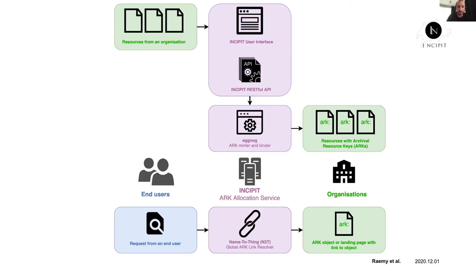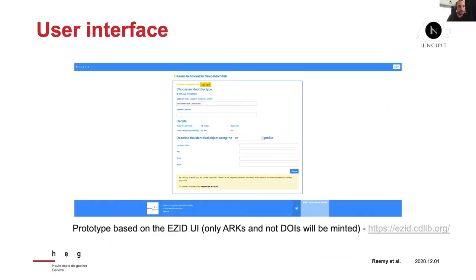You can see in the diagram how we explain the workflow to our customers — once they have an ARC link, how the end user can request it, and how it will be forwarded through N2T. We basically have, like EZID, a user interface and an API. This is the prototype — we've been reusing EZID components, and we will of course have our own design. When we upgrade the different components, we want the EZID infrastructure to benefit from that as well, so any tools we create can later be reused by the CDL.